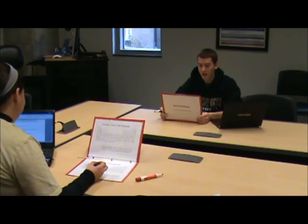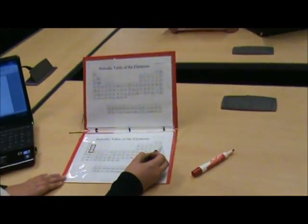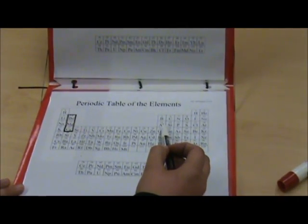I'll start first. 1s2, 2s2, 2p6, 3s2, 3p1. Aluminum? Yep. That's a miss. Aw.